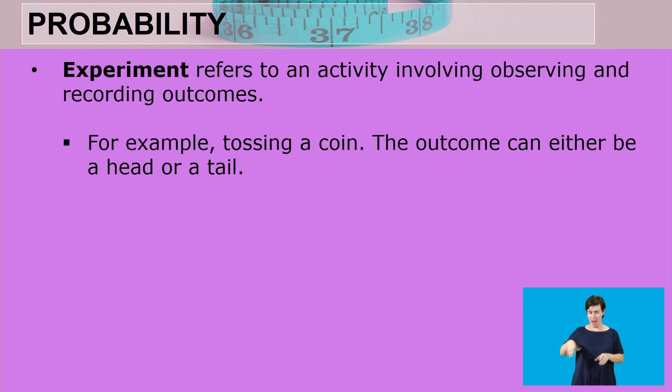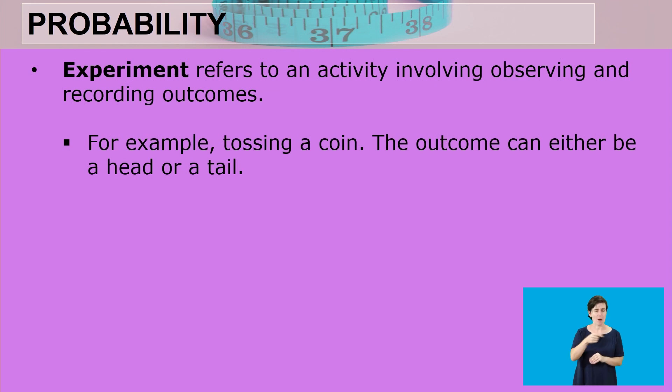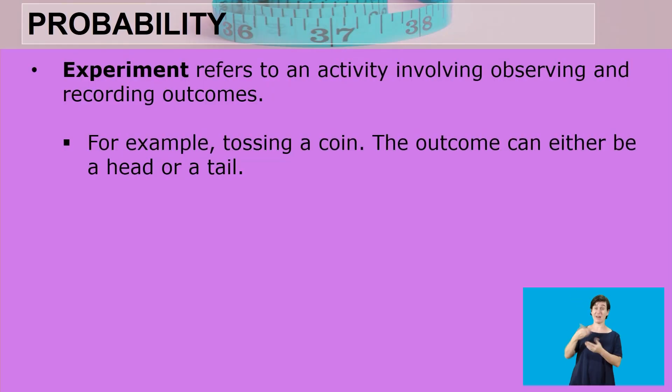An experiment refers to an activity involving observing and recording results. For example, if a learner has written a test, they are observed — they write in a quiet place with monitors and invigilators present. When they're done writing, the teacher marks the exam while also observing what the learner has written, and then afterwards records the results of how the learner performed.